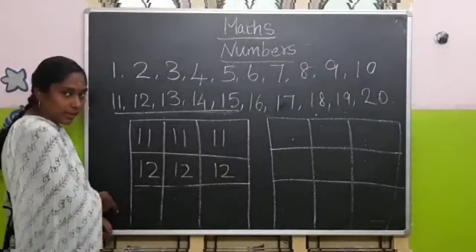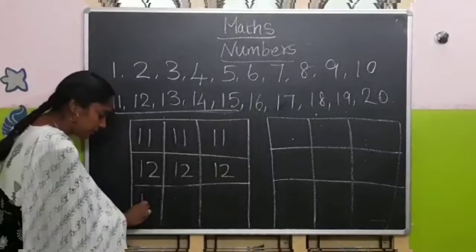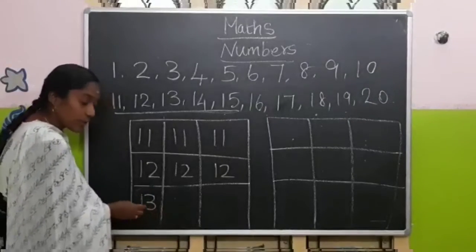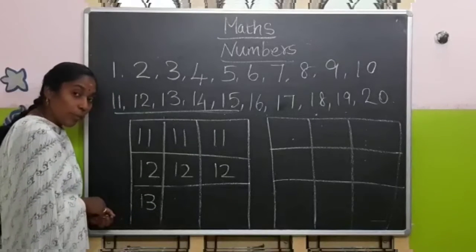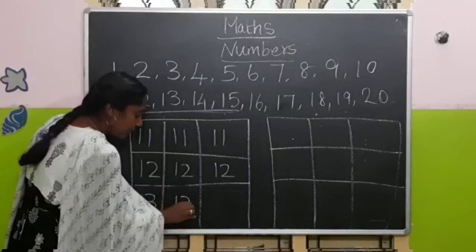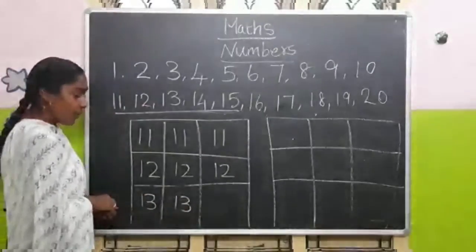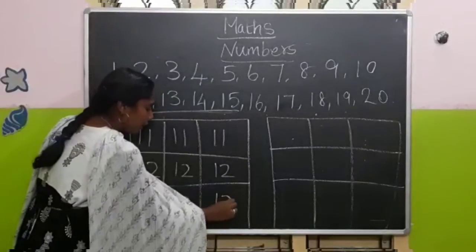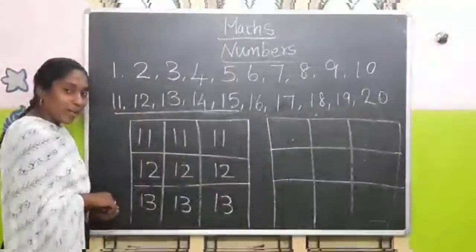To write number 13, you have to put 1 and 3. It makes number 13. One more time: 1, 3 — 13. Very good children.